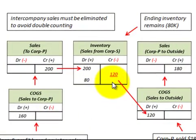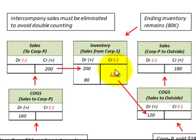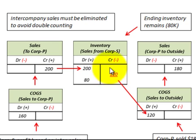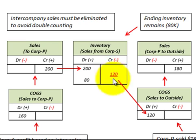Here we're going to look at an example of intercompany sales between two affiliated companies that will have consolidated financial statements. We'll look at how to calculate the profits on these sales and allocate the profits between the realized and unrealized amounts, and then show how to make the eliminations for these intercompany profits as well as on the sales. The example will be based on a subsidiary corporation S and a parent corporation P that will have ending inventory on their intercompany sales.